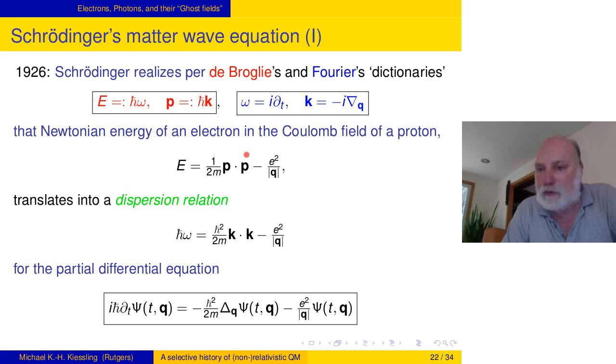What Schrödinger realizes is that the Newtonian energy, not relativistically written, that's kinetic energy minus the Coulomb energy, using De Broglie's dictionary here, becomes that. But that here, according to the Fourier dictionary, can be read as a dispersion relation. We multiply that whole thing through by e to i k x minus i omega t, and then use this, and you end up here, where instead of psi, you have e to i k x minus i omega t standing. Call that thing in more generality psi, and you have Schrödinger's partial differential equation.